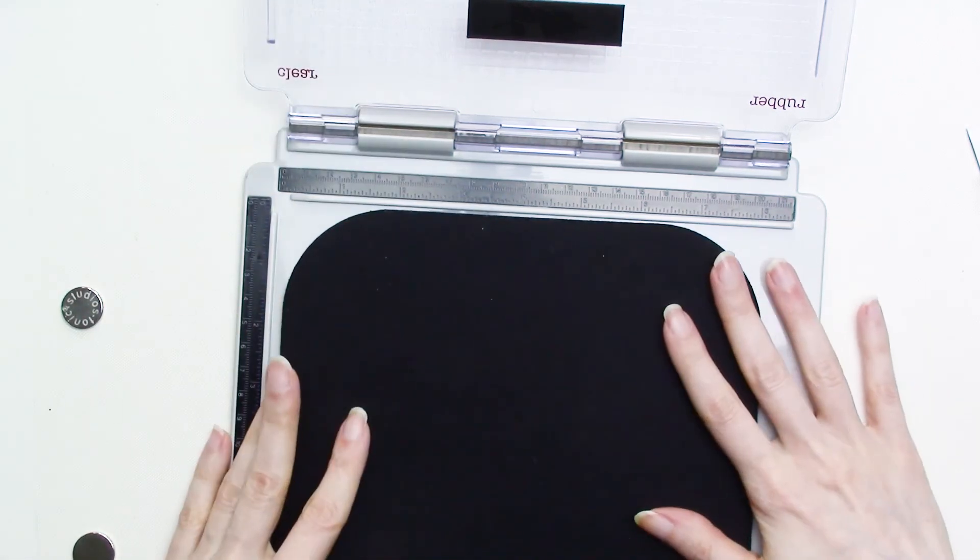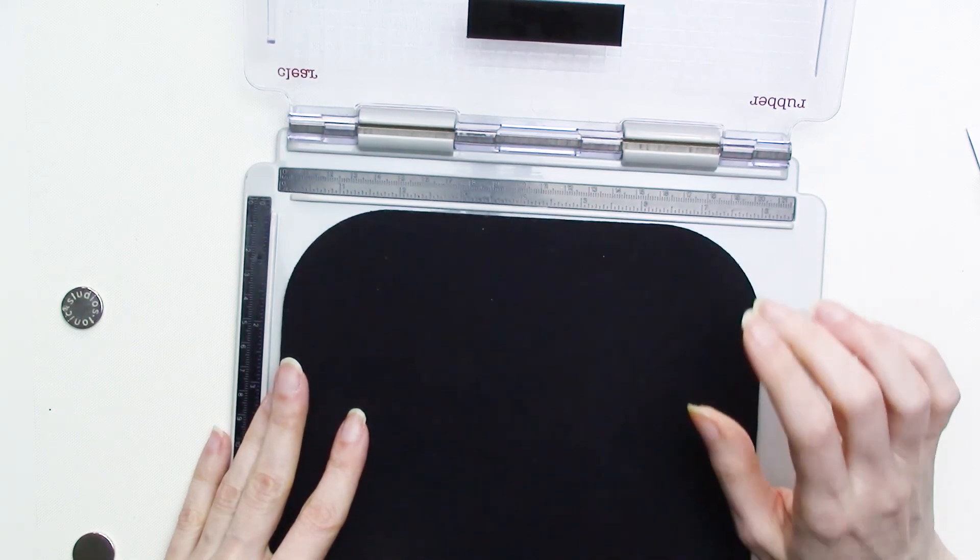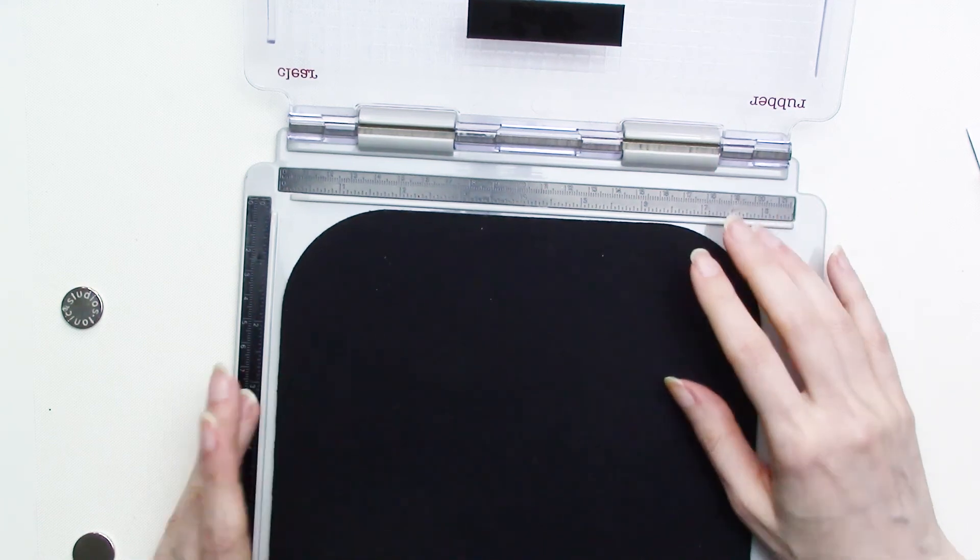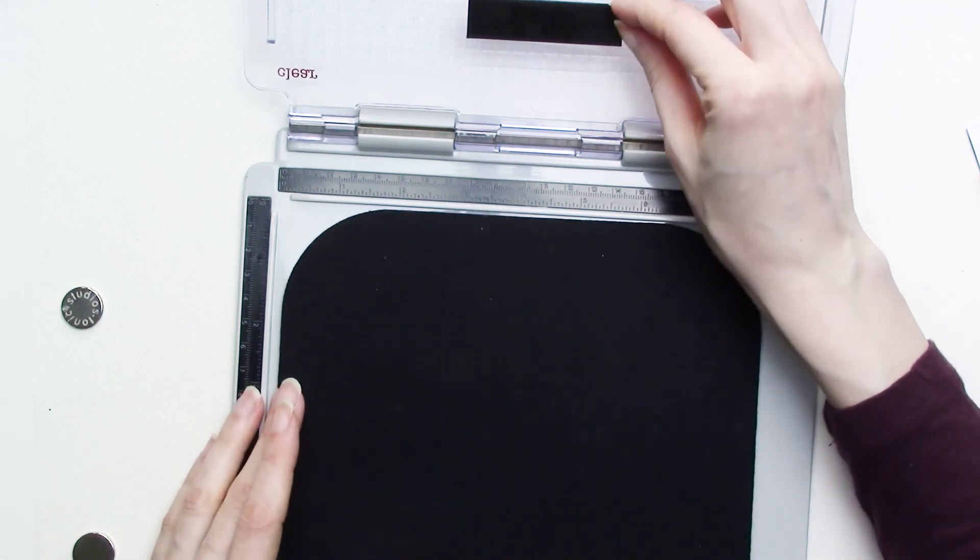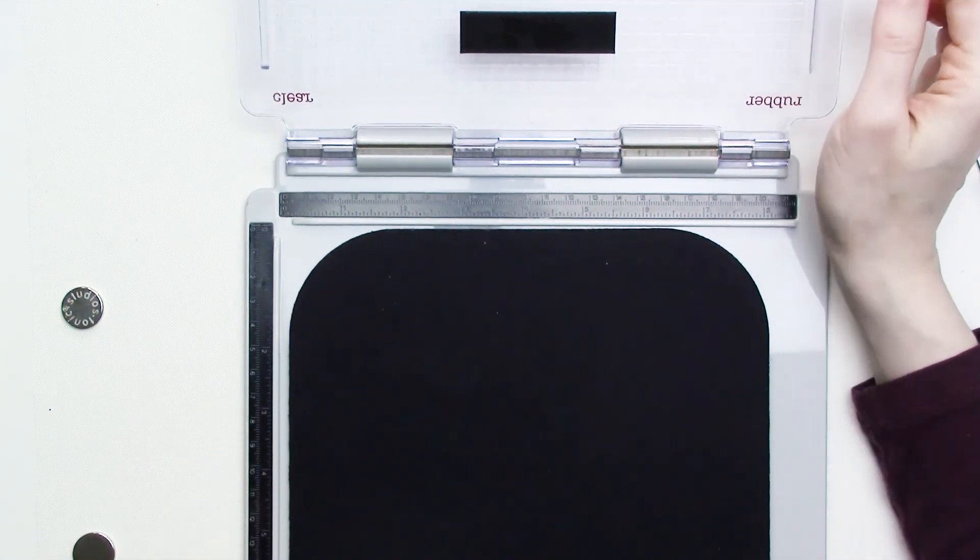You can find a full list of supplies used in this video in the description area below or in the area below the video if you're watching on kbecca.com. I hope that you found this video to be helpful and if you'd like to see more Silhouette Mint stamping videos, please give this video a thumbs up and consider subscribing to my channel.